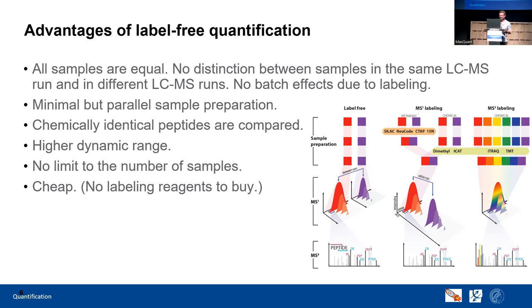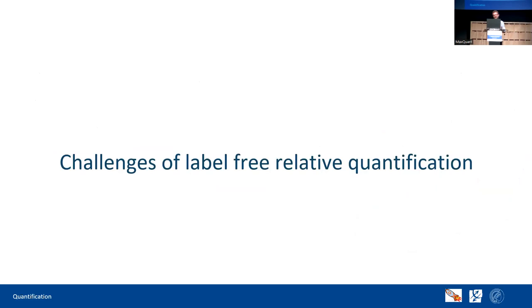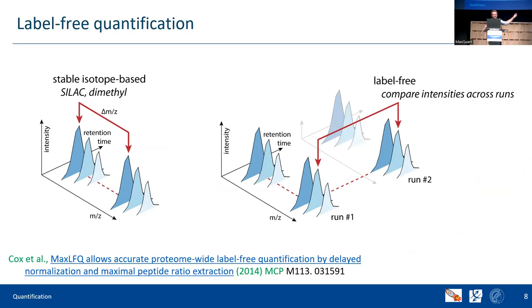Of course there are always some challenges — I don't want to call them problems because they're all solved, so you can relax. Let's compare SILAC, where you have only one run and a heavy and light version of a peptide. You can see the isotope patterns with a specific mass-to-charge difference, and this can be used for quantification. In label-free we need two runs — we compare between two runs — and this is not as easy as it looks.